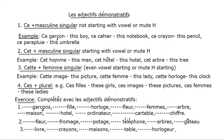The second type is 'cet', used with masculine singular nouns starting with a vowel or mute H. Examples: cet homme (this man), cet hôtel (this hotel), cet arbre (this tree).